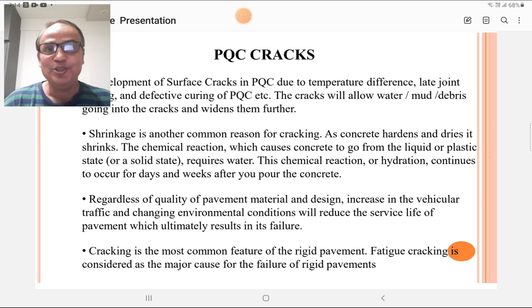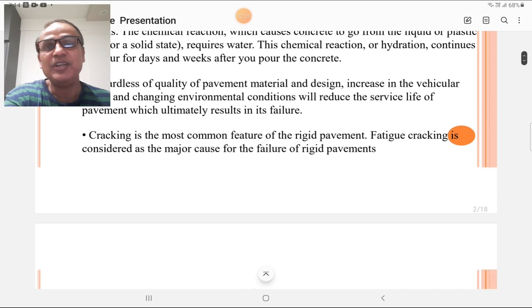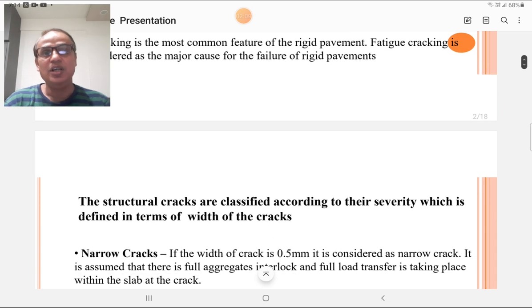Regardless of quality of pavement material and design, increase in vehicle traffic and changing environmental conditions will reduce the service life of pavement, ultimately resulting in failure. Cracking is the most common feature of rigid pavement, and fatigue cracking is considered as a major cause for failure of rigid pavement. We should observe the cracking very carefully and develop various techniques to reduce these cracks.